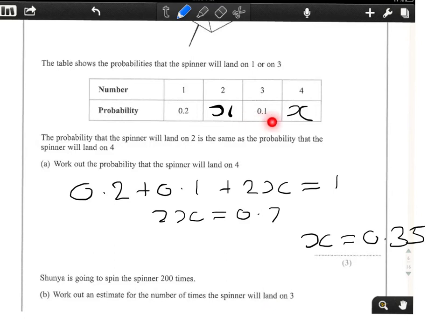Well, we can see from the table that the probability of getting a 3 is 0.1. So we simply take the number of times we're going to spin it and multiply it by the chance of getting that number, which is 200 times 0.1. And we should know that 200 times 0.1 is a tenth of 200, so our answer will be 20.